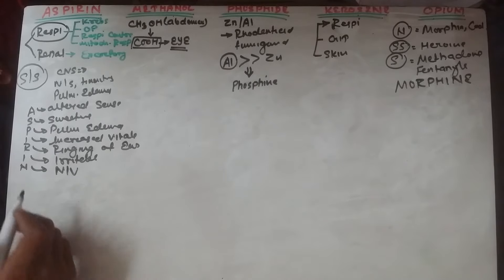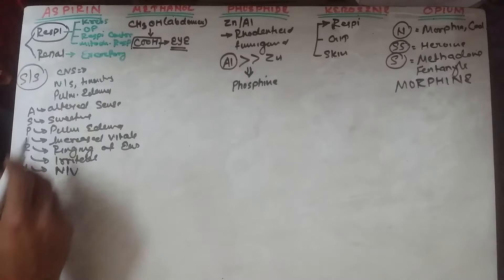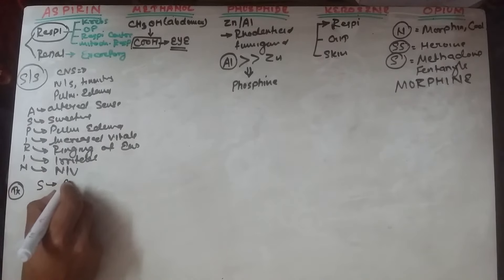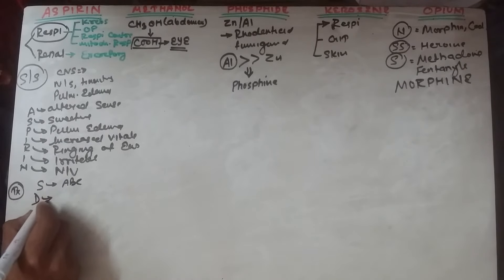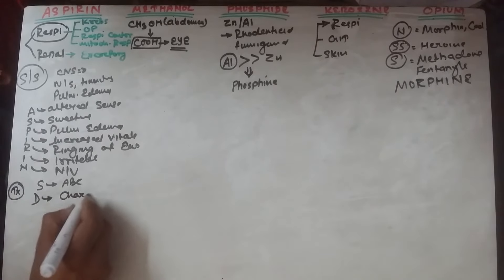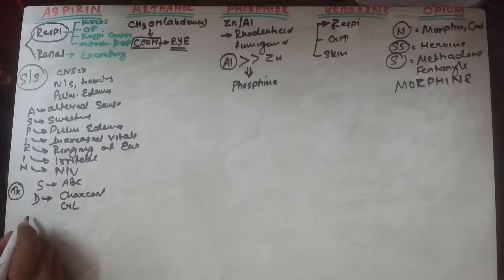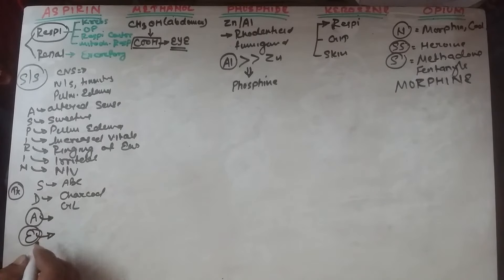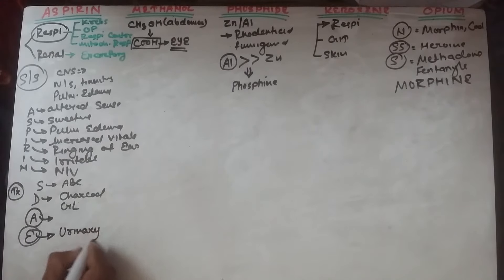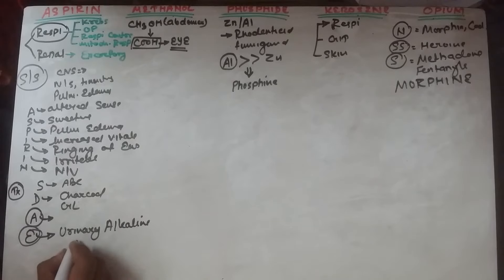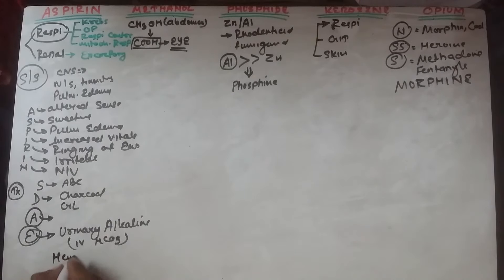Treatment for aspirin poisoning: first stabilize airway, breathing, and circulation. For decontamination, use activated charcoal and gastric lavage. There is no specific antidote. For elimination, urinary alkalinization is done by IV sodium bicarbonate (NaHCO₃) infusion. In some cases, hemodialysis can also be performed.